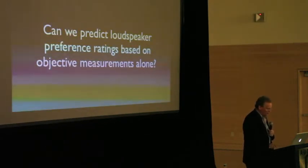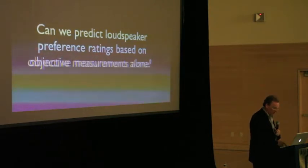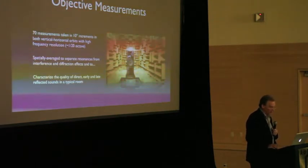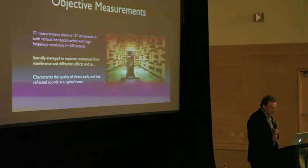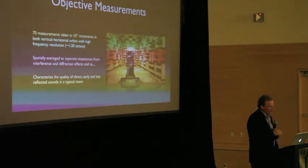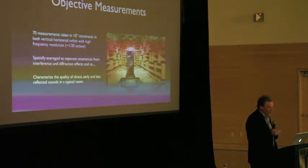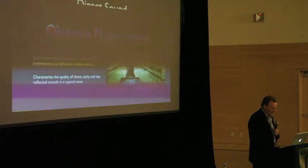So, the next question we ask is whether from measurements alone can we predict how speakers, how listeners will rate a speaker in a listening room, a typical listening room. So, the sort of measurements we do, these were developed really back in the 1980s by Floyd Toole at the National Research Council. And they've been somewhat refined in the intervening years. But what we do is we take 70 measurements in 10 degree increments in both the horizontal and vertical orbits around the loudspeaker. And we then spatially average them so that we can remove diffraction or interference effects. And then from those measurements we can characterize the direct, early, and late reflected sounds in a typical room.